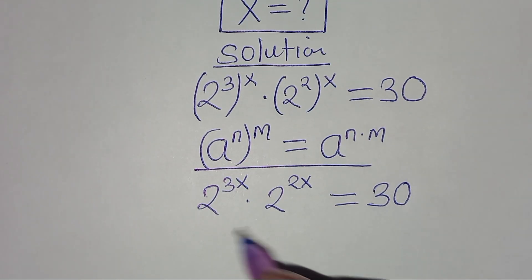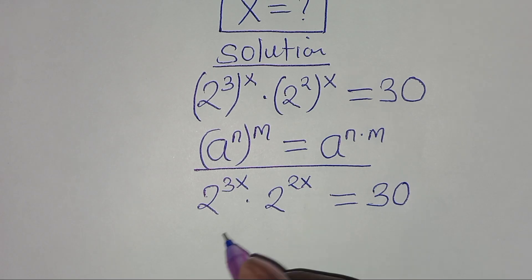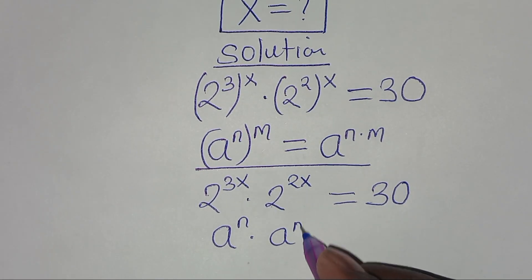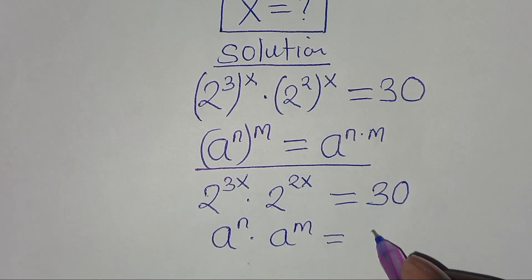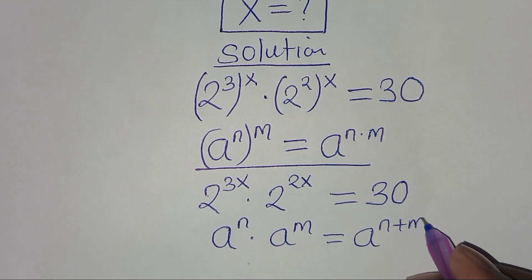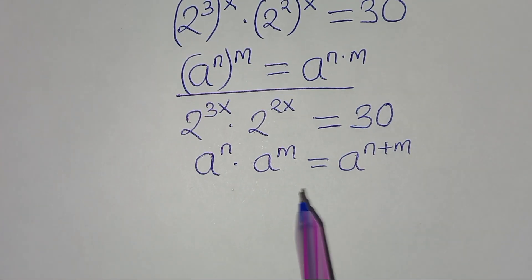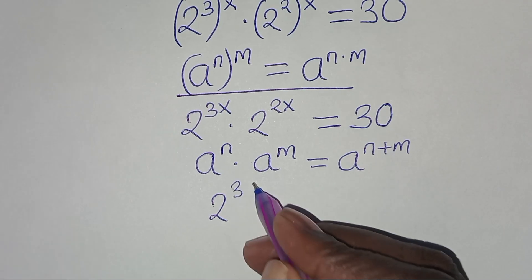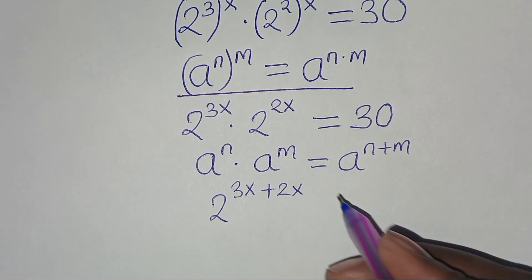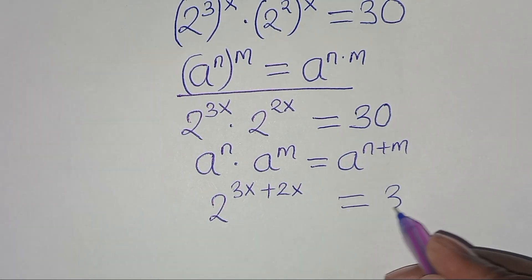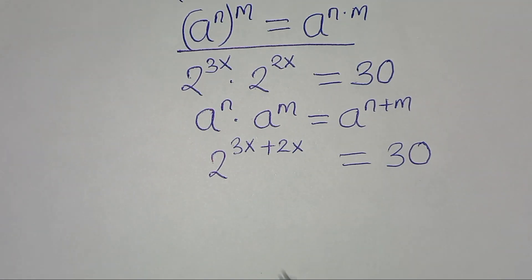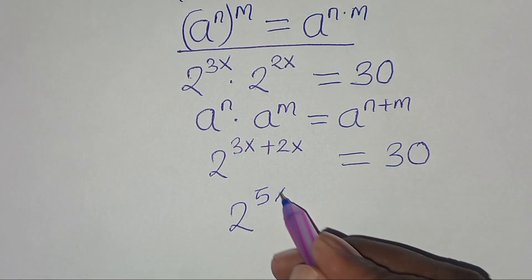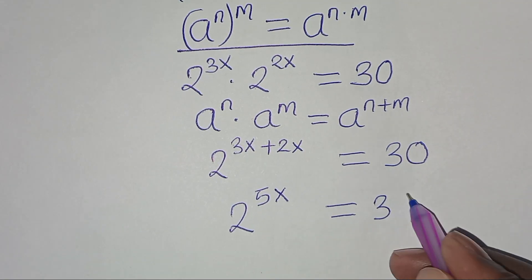The next step is that 2 to the power 3x times 2 to the power 2x is in the form of a to the power n times a to the power m, which we can express as a to the power n plus m. Applying this exponent property, we have 2 to the power 3x plus 2x, equal to 30. This implies that 2 to the power 5x is equal to 30.